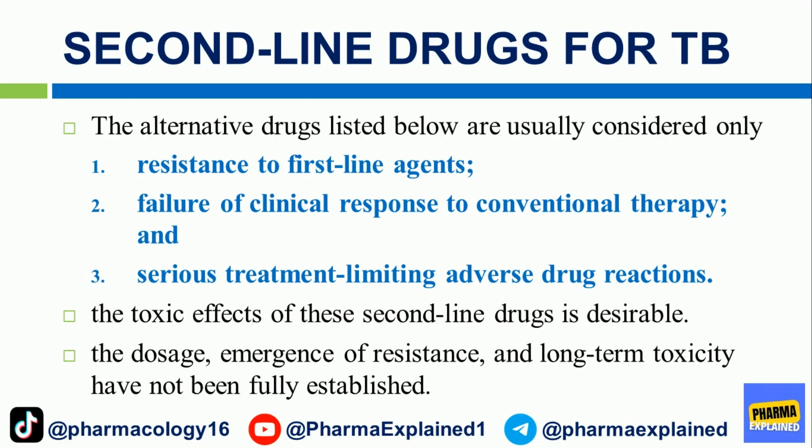Second-line drugs for TB are usually considered only in cases of resistance to first-line agents, failure of clinical response to conventional therapy, and serious treatment-limiting adverse drug reactions. The toxic effects of these second-line drugs are considerable; dosage, emergence of resistance, and long-term toxicity have not been fully established.